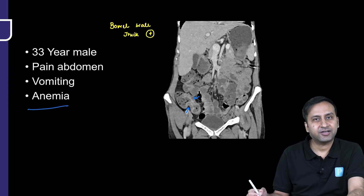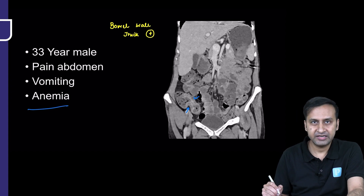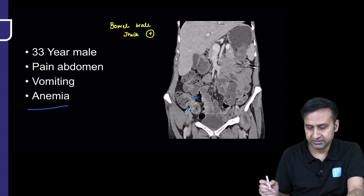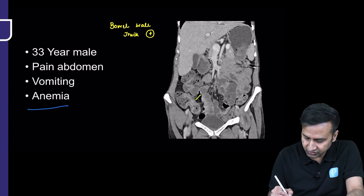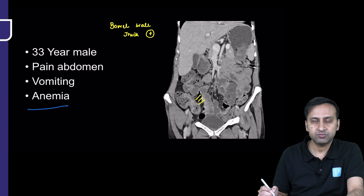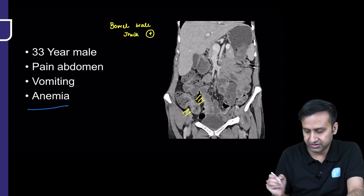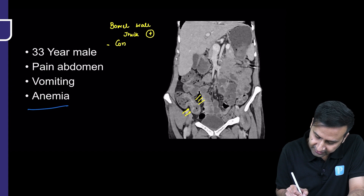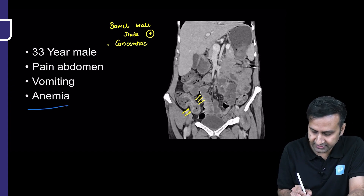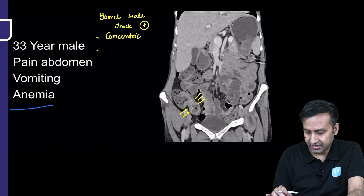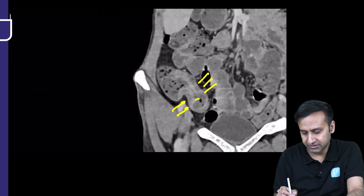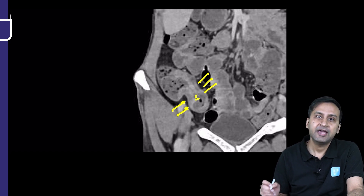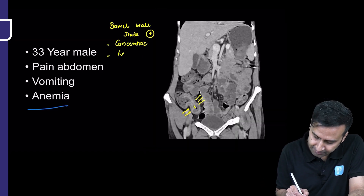Regarding the characteristics of the bowel thickening — is it symmetric or asymmetric? It is symmetric. Both the mesenteric and anti-mesenteric segments of the bowel are equally involved, giving us concentric bowel wall thickening. Next, is it enhancing? Yes — it is an enhancing bowel wall thickening, with enhancement most prominent in the inner mucosal layer, giving a layered pattern of enhancement.